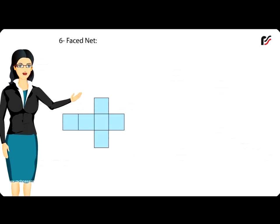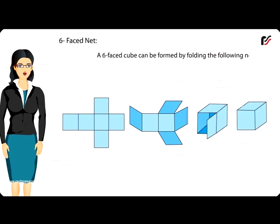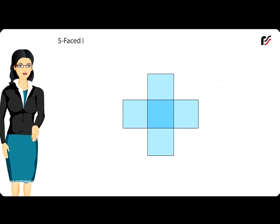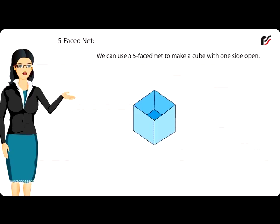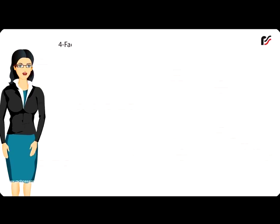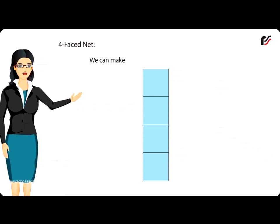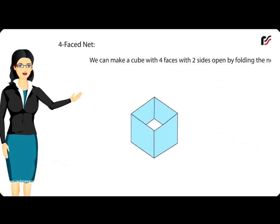Six-faced net: A six-faced cube can be formed by folding the following net. Five-faced net: We can use a five-faced net to make a cube with one side open. Four-faced net: We can make a cube with four faces with two sides open by folding the net.